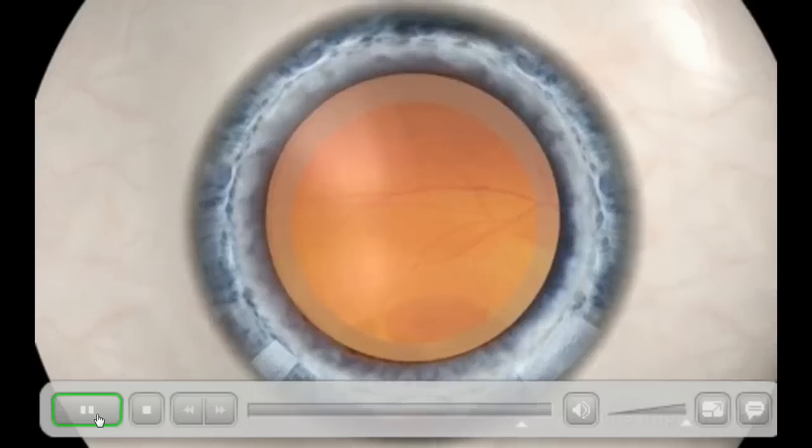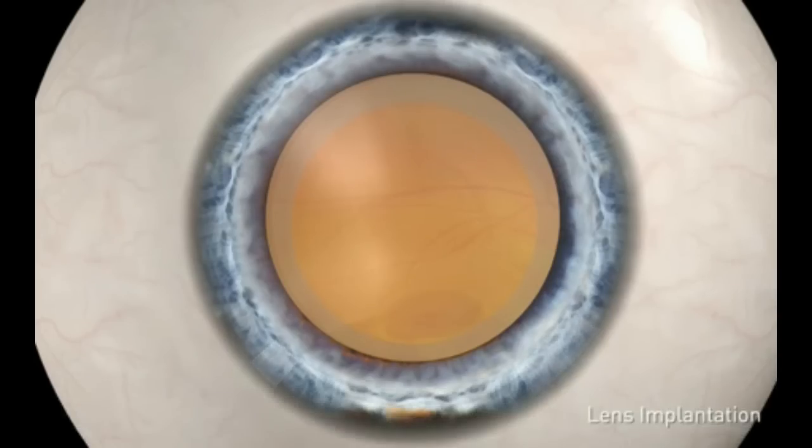Once the cataract is removed, the intraocular lens of your choice is inserted through the self-sealing incision and locked into position. Typically, no sutures are required. The entire procedure takes only 15 to 20 minutes.